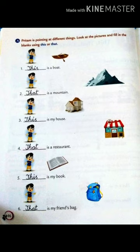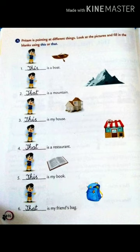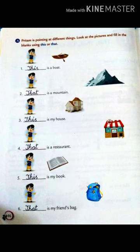Number five is: dash is my book. You will fill here 'this', because the book is near to Pritam. This is my book.